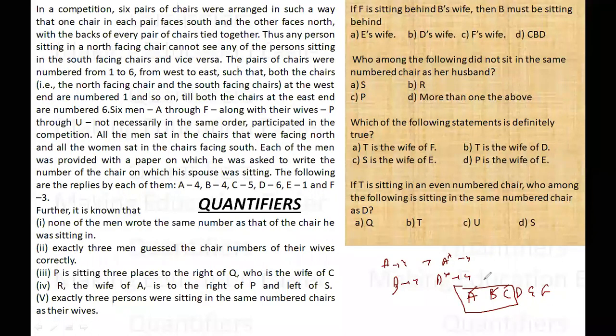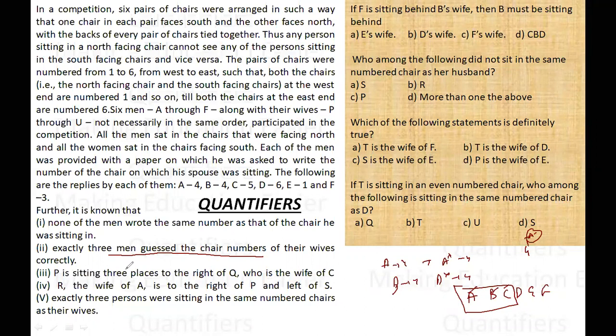If A has guessed that his wife is sitting on fourth position and he is correct, then R is sitting three places to the right of Q who is the wife of C. R is the wife of A, is to the right of P and left of S.